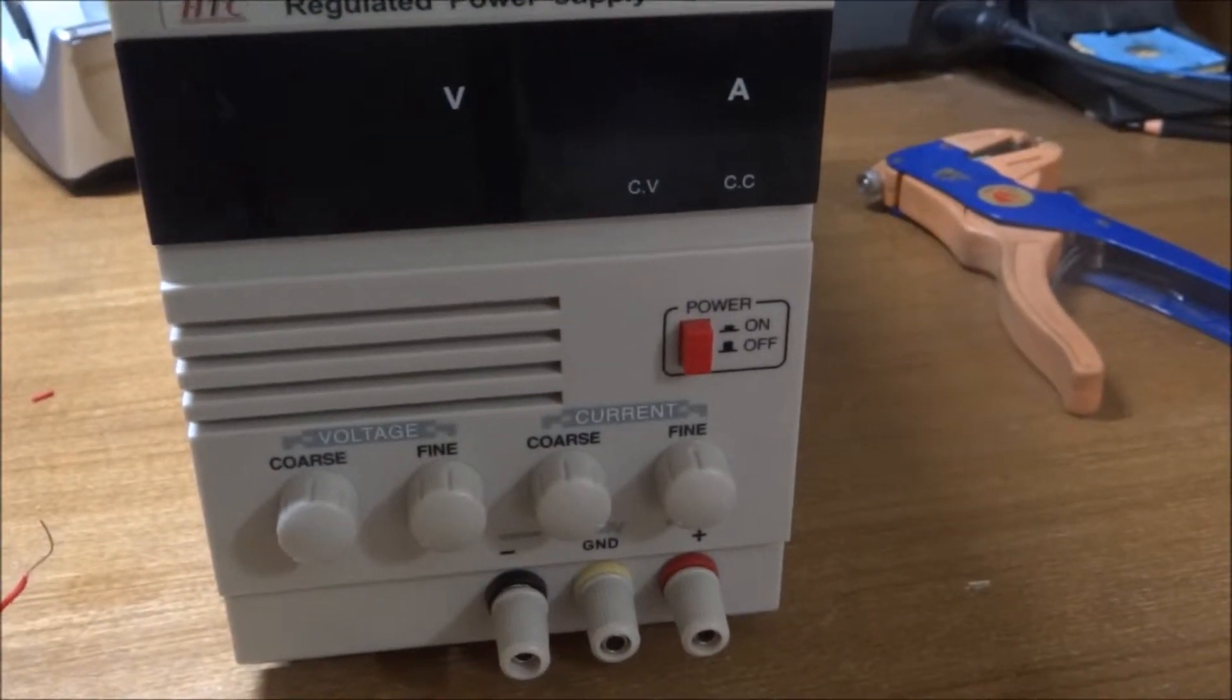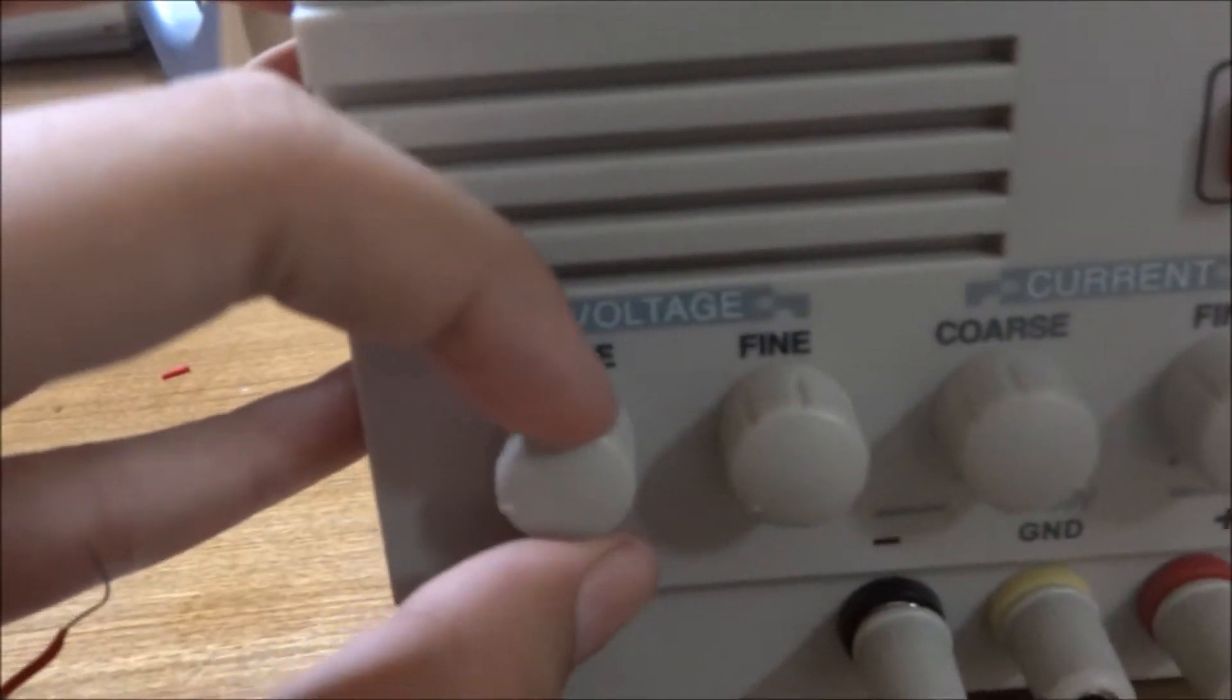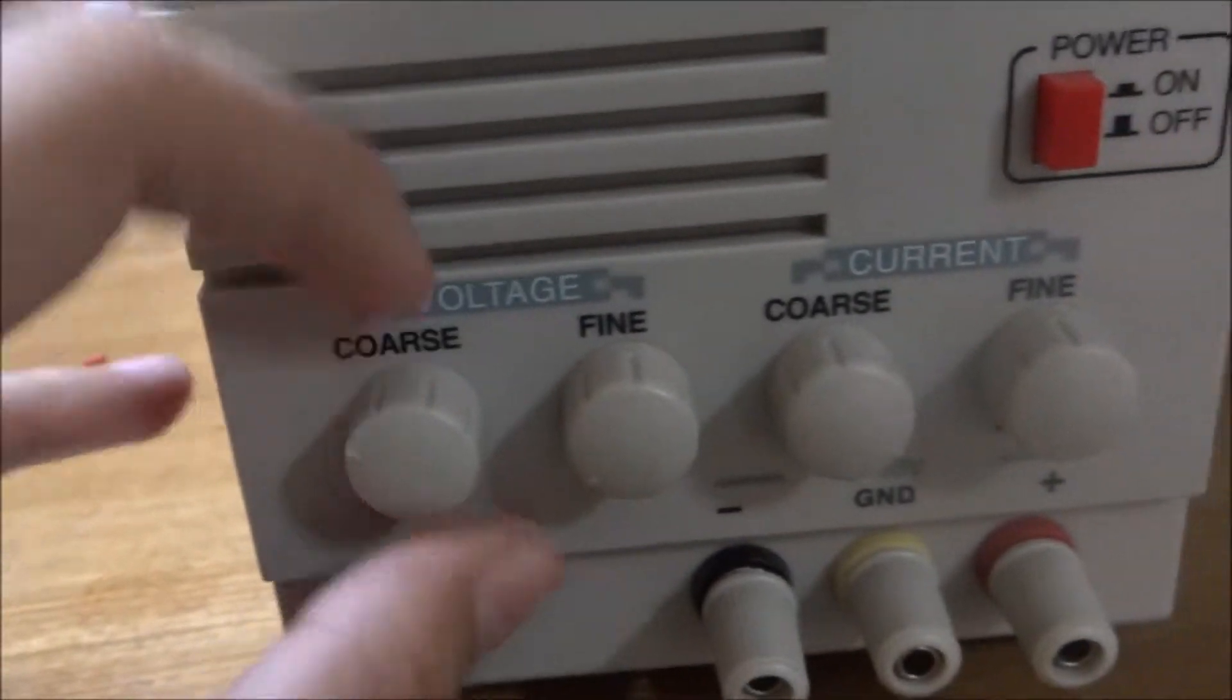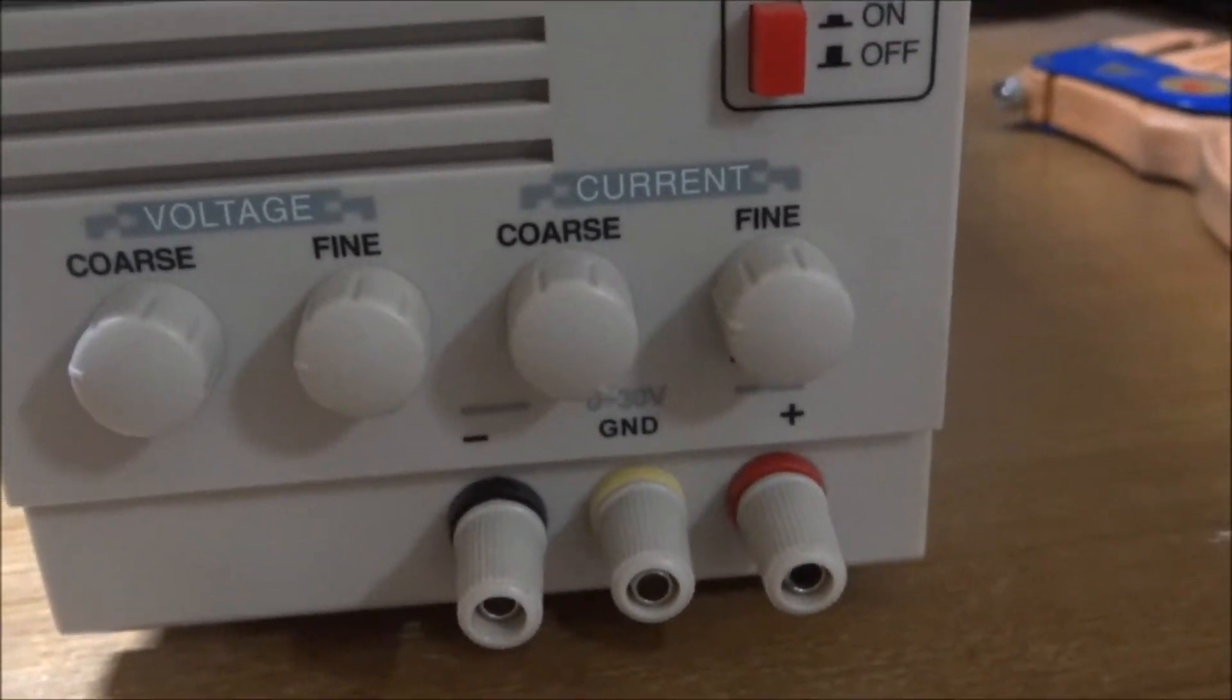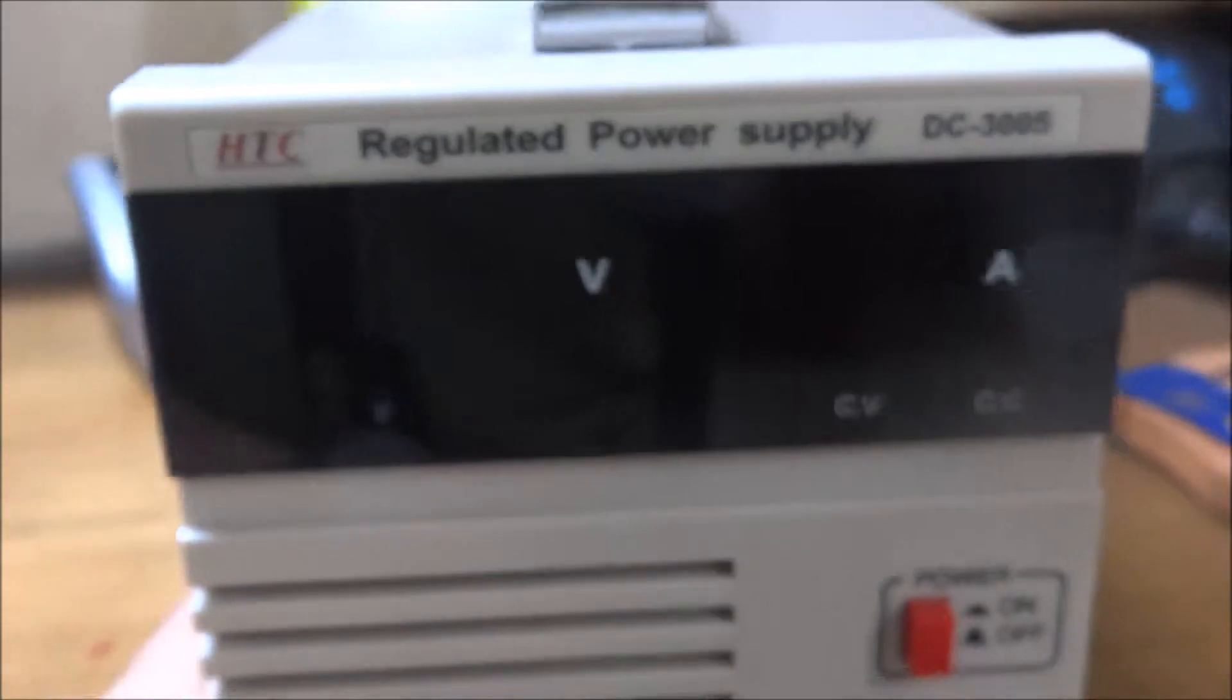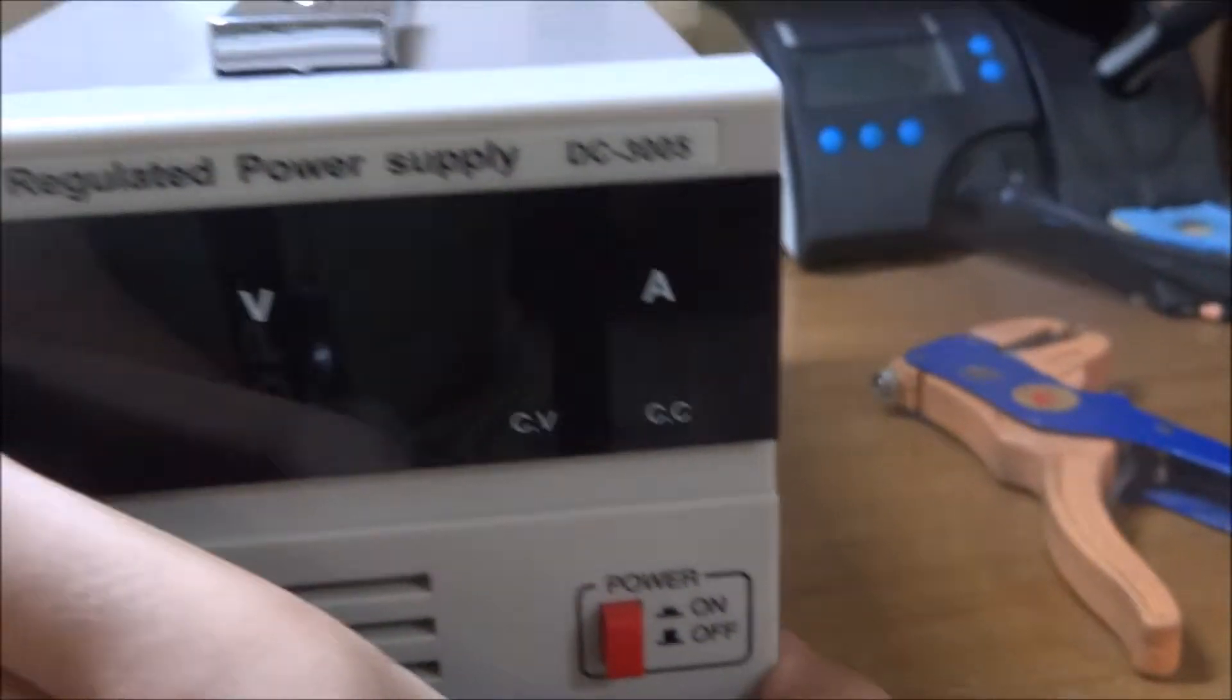So this is the power supply itself. It's got a standard on-off switch, a fine and coarse adjustment port for the voltage as well as current, three binding posts as you would expect, as well as a digital display with both constant voltage and constant current indicators.